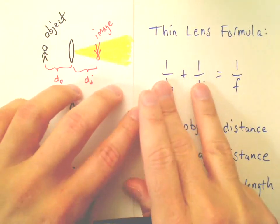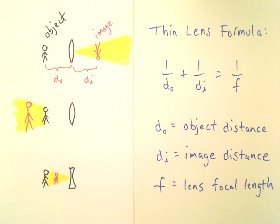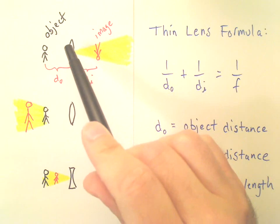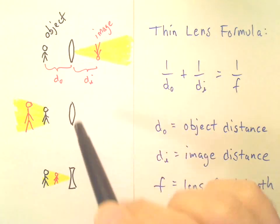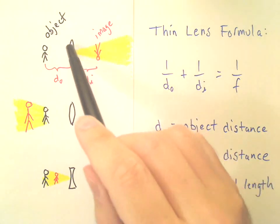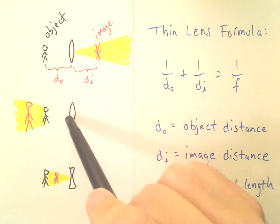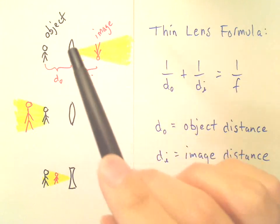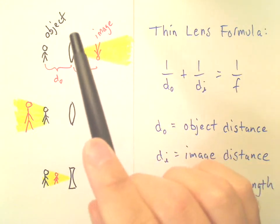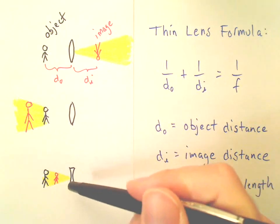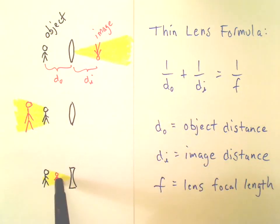Now there are three ways to make an image with a lens. There are two ways to do it with a converging lens and one way to do it with a diverging lens. A converging lens is sometimes referred to as a convex lens; a diverging lens is sometimes referred to as a concave lens. In the case of the converging lens, the image can either be on the same side of the lens as the object or on the opposite side, whereas the diverging lens will only produce an image that's on the same side.